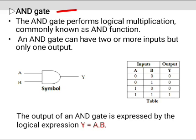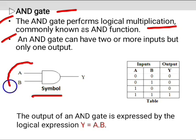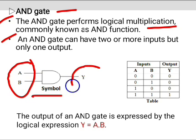The next basic gate is the AND gate. The AND gate performs logical multiplication, commonly known as the AND function. An AND gate can have two or more inputs but only one output. This is the symbol of the AND gate. Consider a two-input AND gate where A and B are the inputs and Y is the output.